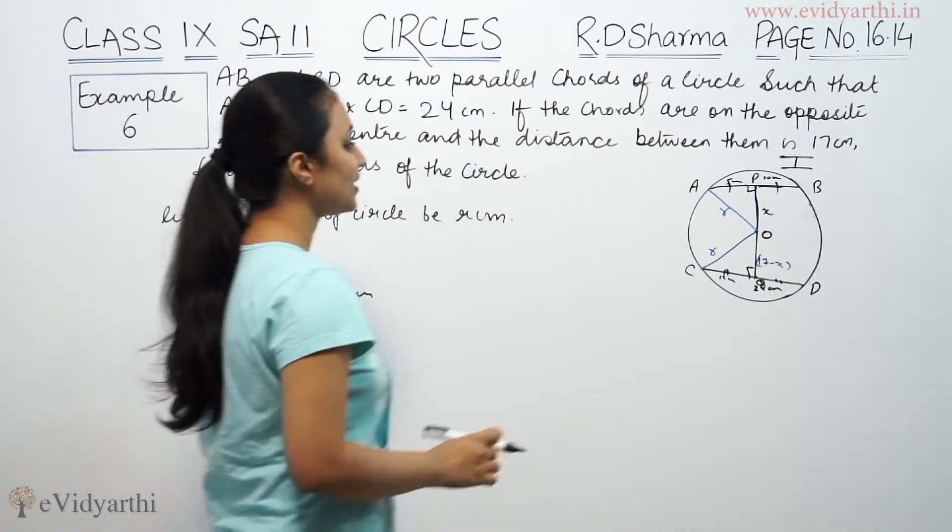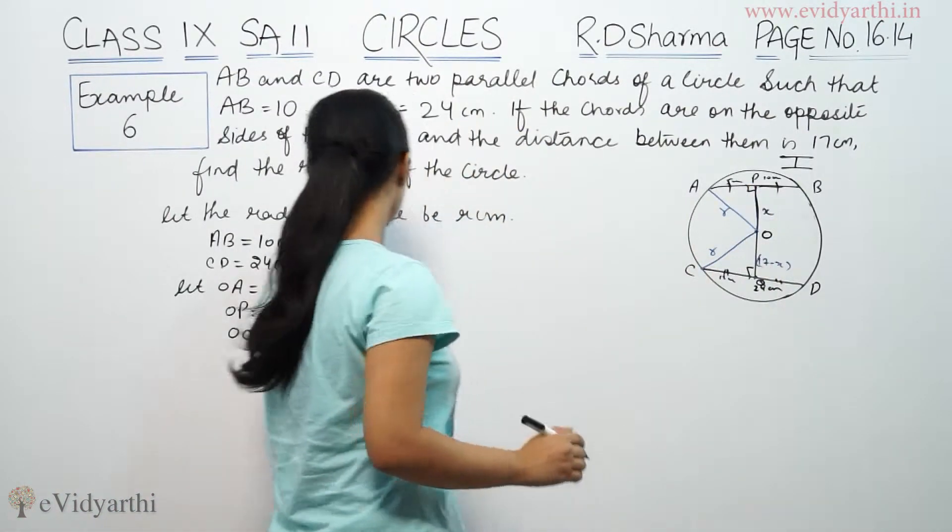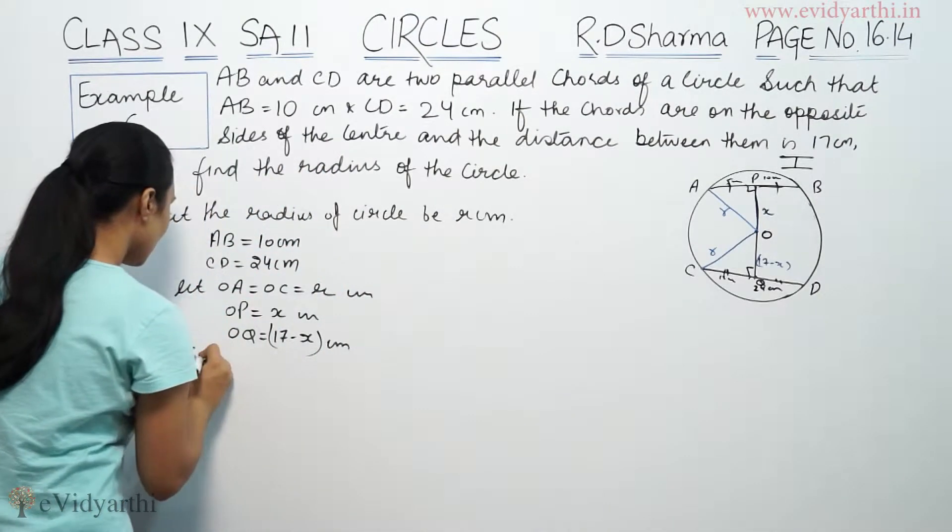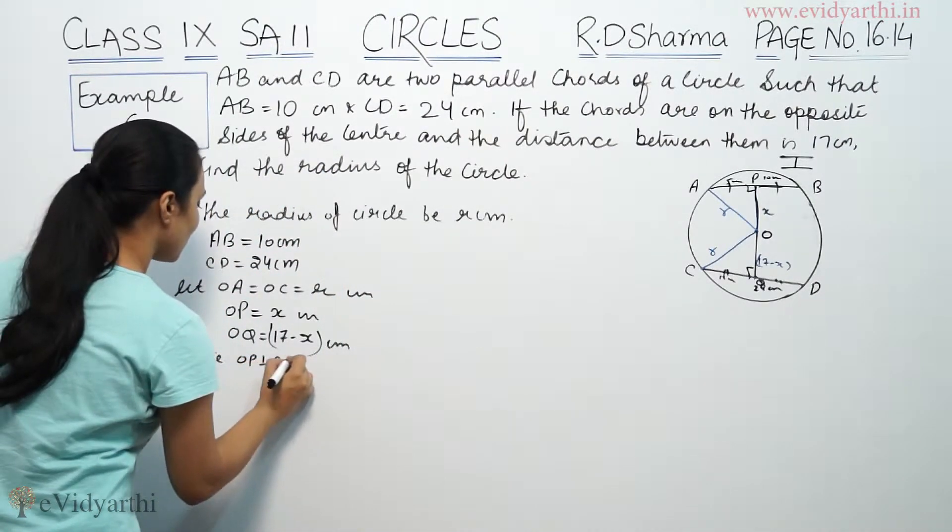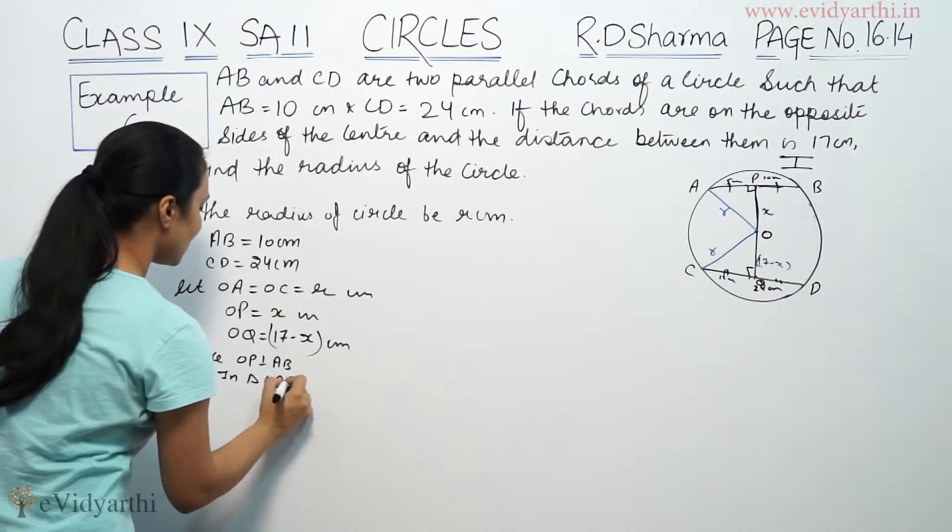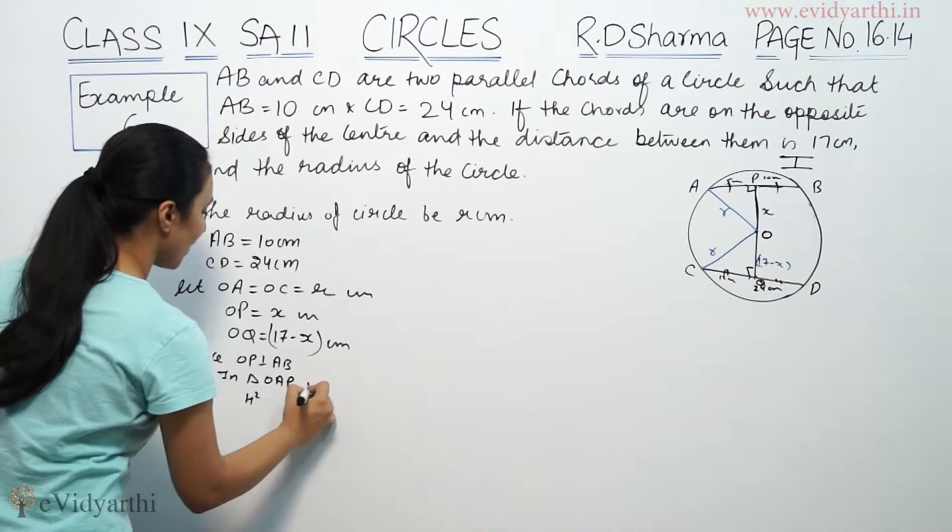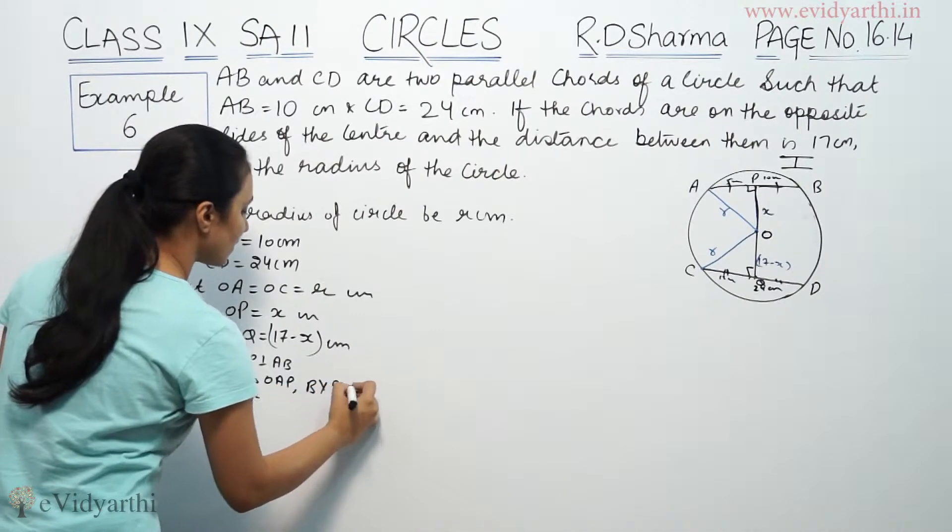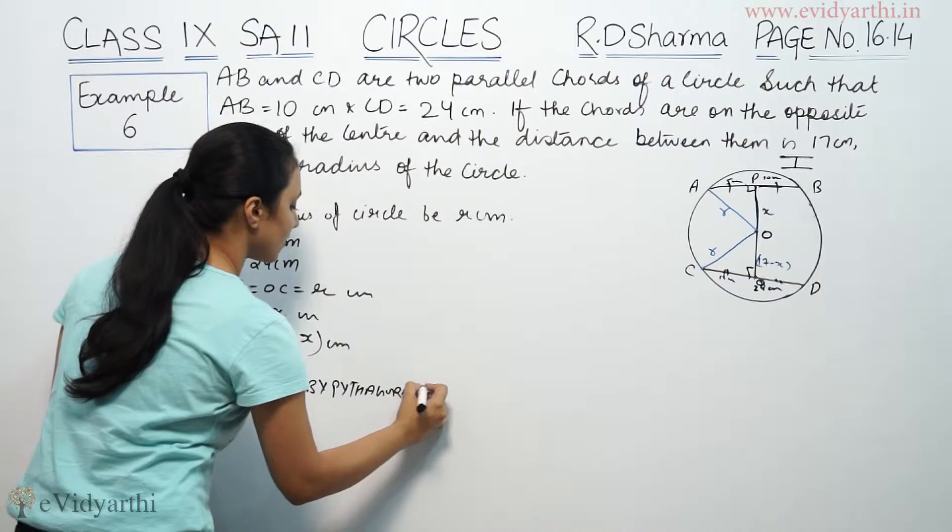Now let's take this triangle. It is a right angle triangle. Since OP is perpendicular to AP. So in triangle OAP, by Pythagoras theorem: